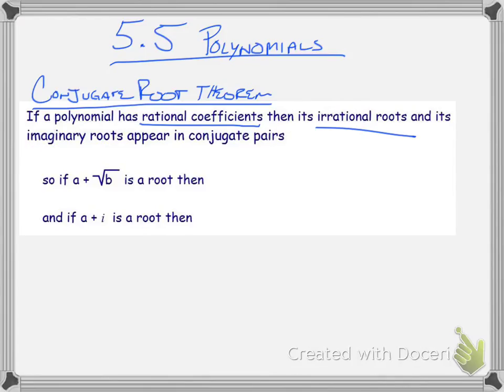what that's going to do is that they're going to appear as conjugate pairs. So, if you have one irrational root, then its conjugate will also be a root. And if you have an imaginary root, then its conjugate will also be a root. So basically what it's saying, if I have a root of a polynomial, a plus square root of b, then that means its conjugate, a minus the square root of b, will also be a root of that polynomial.